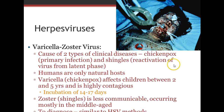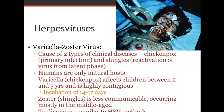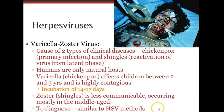Another herpes virus is varicella zoster, otherwise known as chickenpox, which can cause two diseases. The first is chickenpox — the primary infection typically occurring in childhood — and the second is shingles, a reactivation of the virus from its latent phase, which is reportedly very painful. Humans are the only natural host. Chickenpox typically affects children ages 2 to 5 and is highly contagious, with an incubation of 14 to 17 days. Shingles is less communicable and usually occurs in middle age. Diagnosis is similar to HSV methods.